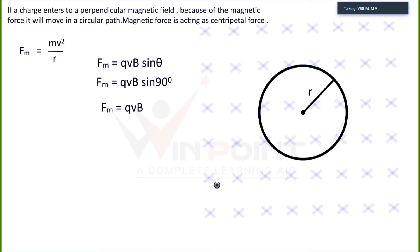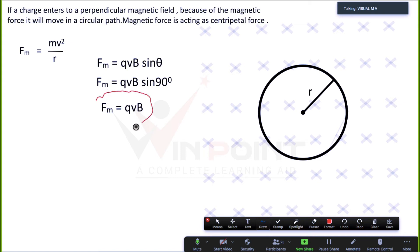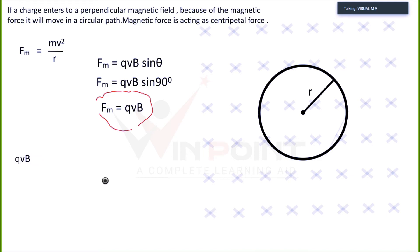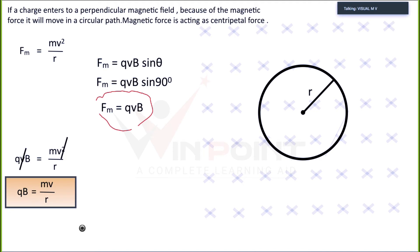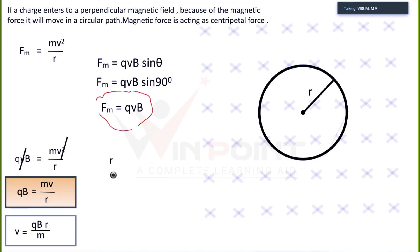We can write: Fm = Mv²/R. Since Fm = QvB, substituting gives QvB = Mv²/R. Cancelling V from both sides: QB = Mv/R. This is a very important relation. From this equation we can derive equations for various quantities. V = QBR/M, and R = Mv/QB. Here Mv is momentum, so R can also be written as P/QB.